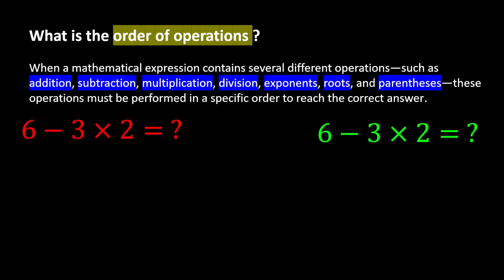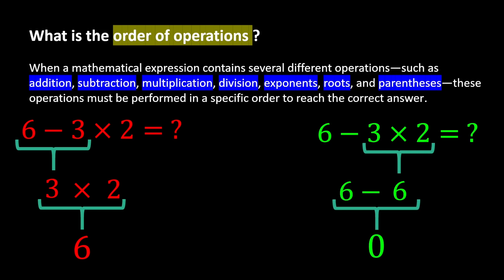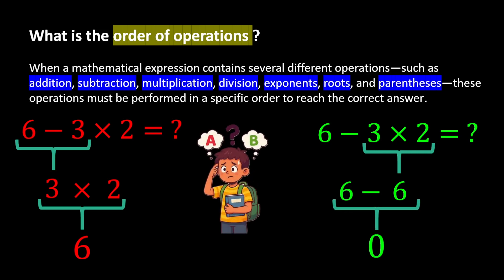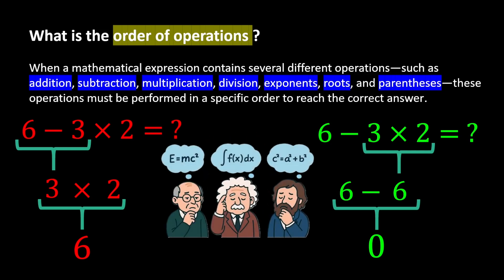6 minus 3 times 2. If we first calculate 6 minus 3, it becomes 3, and 3 multiplied by 2 becomes 6. But if from the beginning we calculate 3 multiplied by 2, it becomes 6, and 6 minus 6 becomes 0. In your opinion, which answer is correct, 0 or 6?